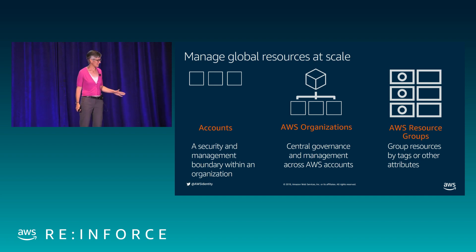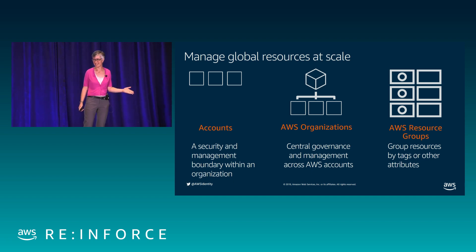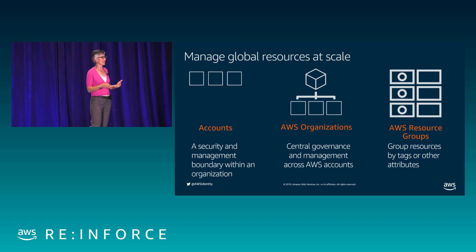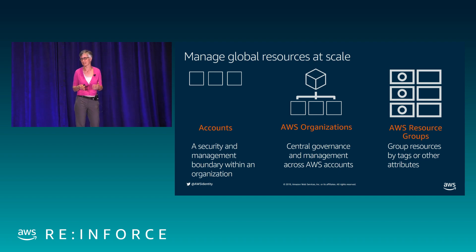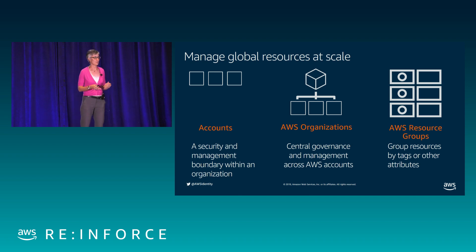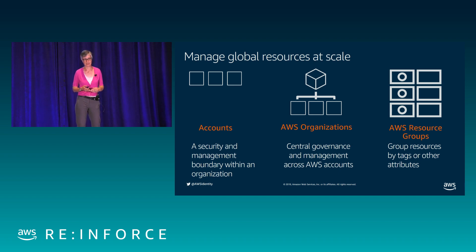Tagging isn't the only way you can logically think of grouping resources. We've started to expose other constructs in AWS that people naturally think of as groups as officially as resource groups. Today, for example, you can form an AWS resource group based on all the resources created by a CloudFormation stack. That may be another natural way to think about grouping, especially if you use CloudFormation for a lot of automation.